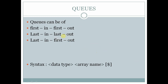Queues can be of three types. The first type is first in first out, another is last in last out, and the other is last in first out. The syntax is the data type followed by the array name followed by the dollar symbol ($).